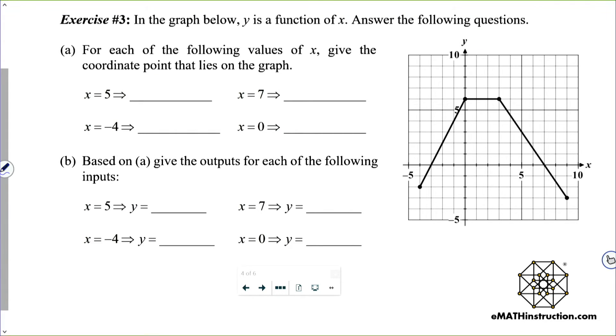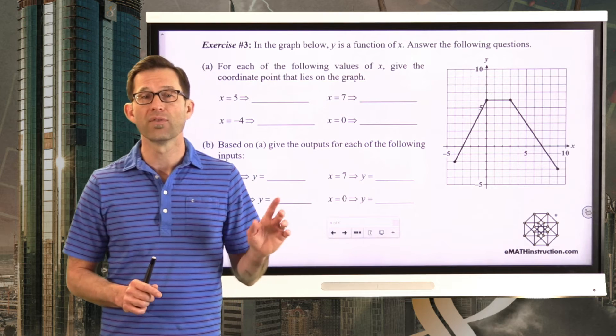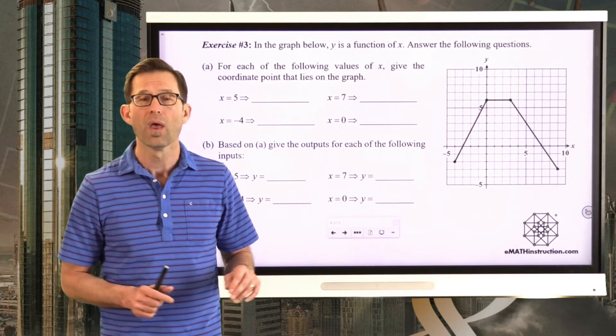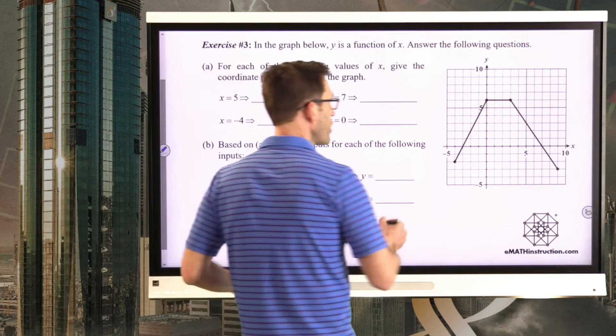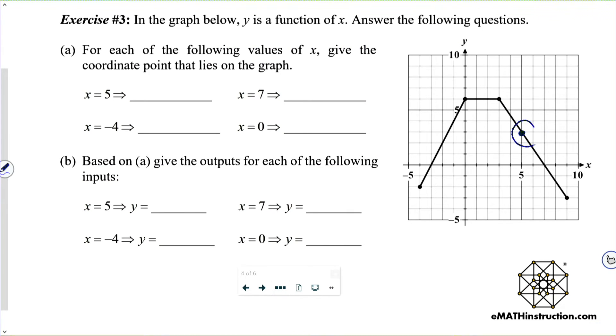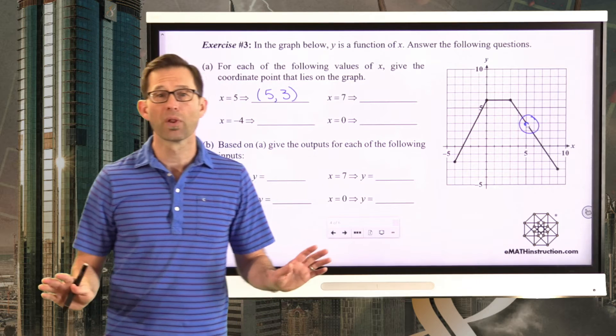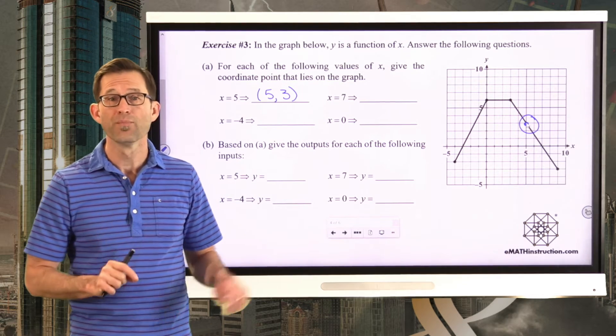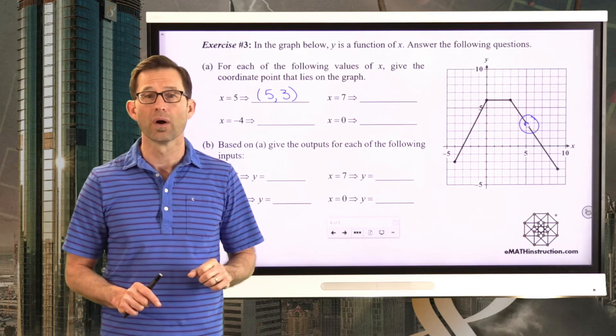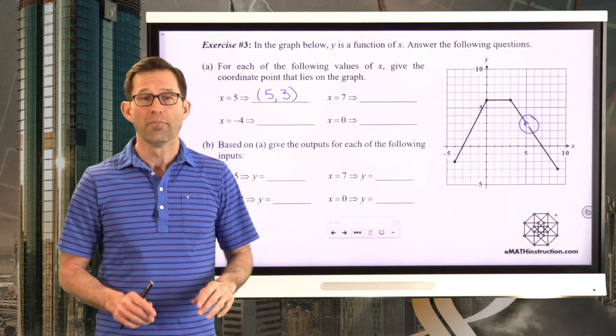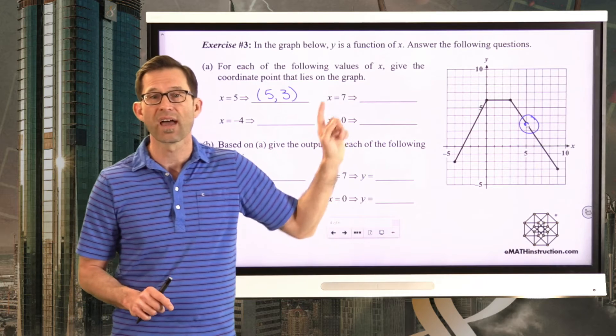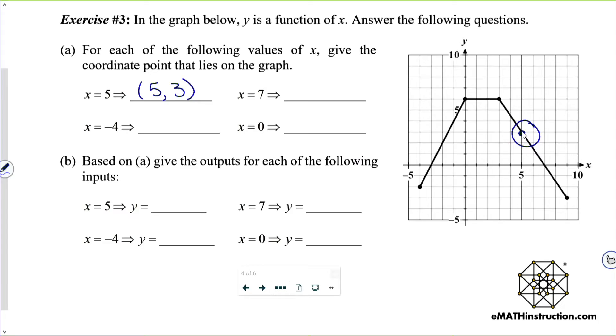In the graph below, y is a function of x. Answer the following questions. Letter a. For each of the following values of x, give the coordinate point that lies on the graph. All right, fantastic. So let's do this together for one of them, and then have you do the other three on your own, because I know you know how to read a coordinate grid. So let's say we take this one, x equals 5. I'm going to go over to the graph where x is equal to 5, and I'm going to find the point on the graph, and that specifically corresponds to the point 5, 3. Simple enough. What I'd like you to do, really quickly, is pause the video and go through for x equals 7, x equals negative 4, and x equals 0. Just figure out what coordinate point corresponds to these x values on the graph.